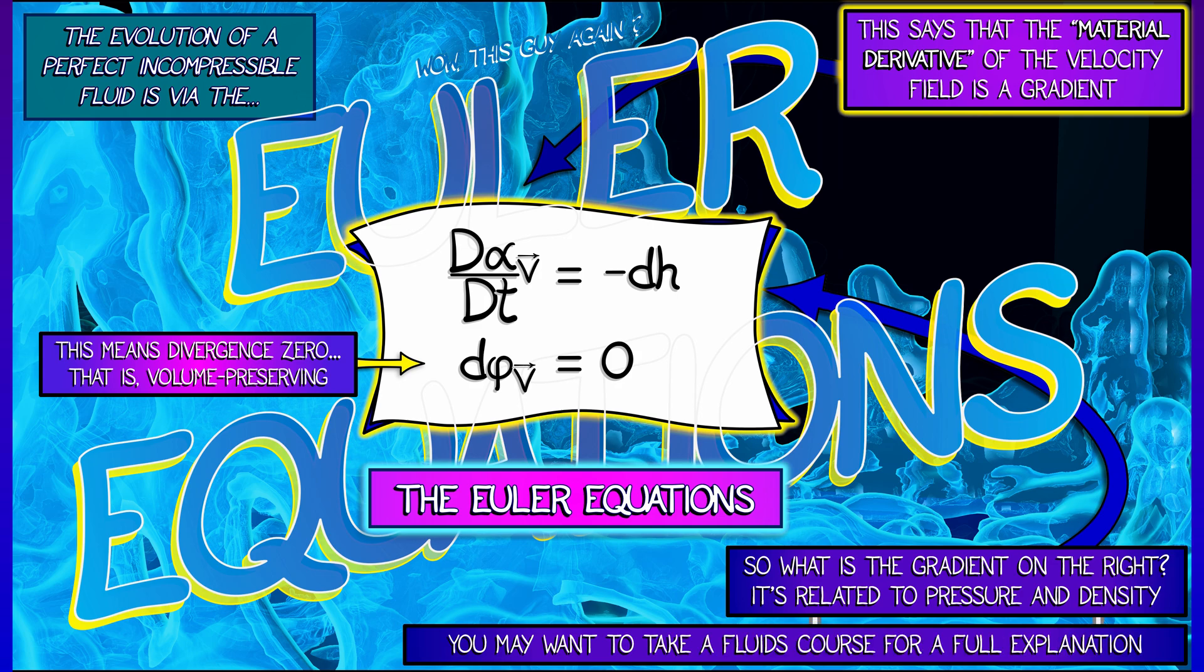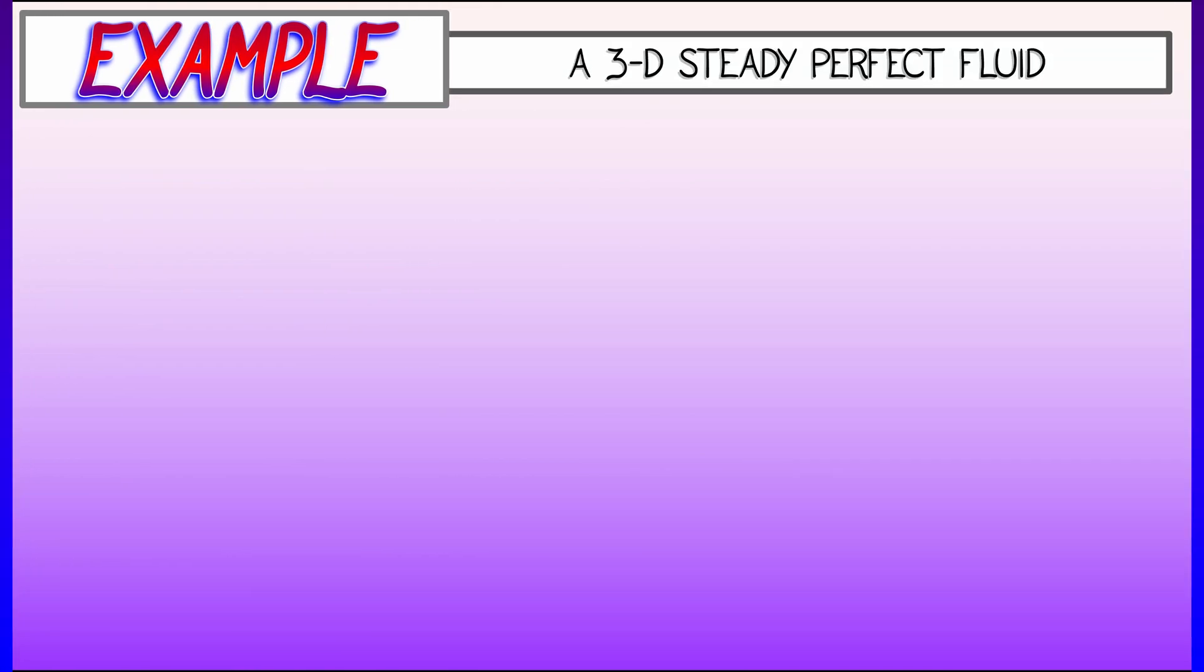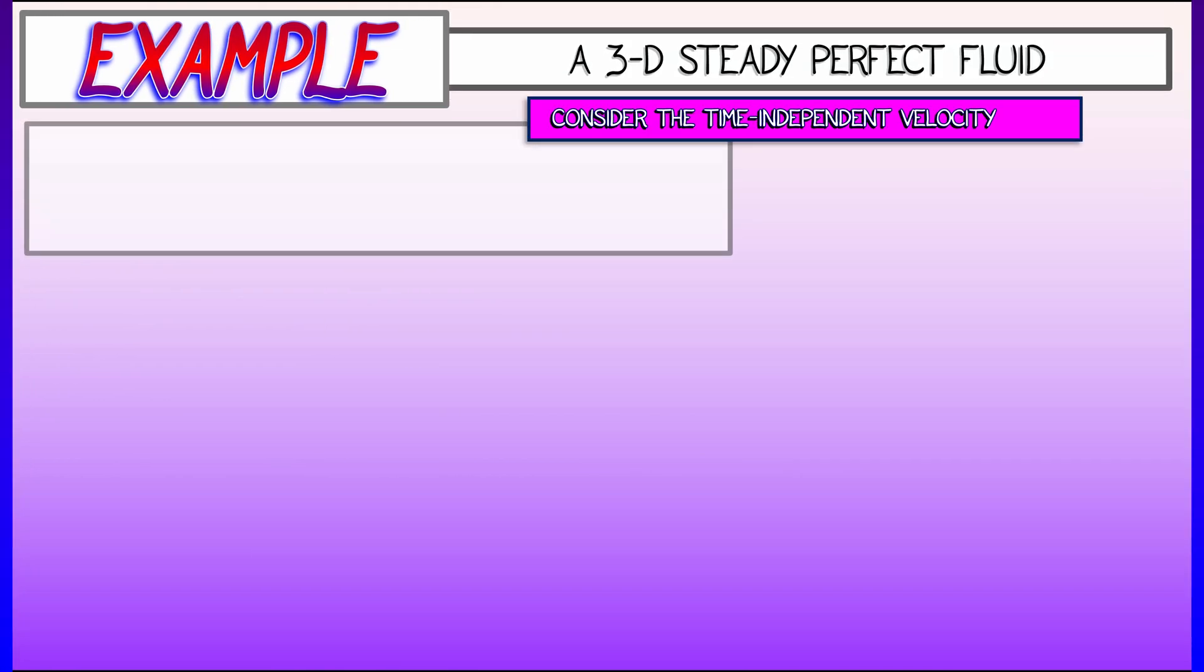If you want to learn more, you might want to take a course in fluid dynamics. For now, what we're going to do is work with these equations, and maybe try to figure out a simple example. So let's get going on that. Let's consider the following vector field, a vector field that's going to be time independent. V, the velocity field, is given by two cosine y i plus sine x j plus quantity two sine y plus cosine x k.